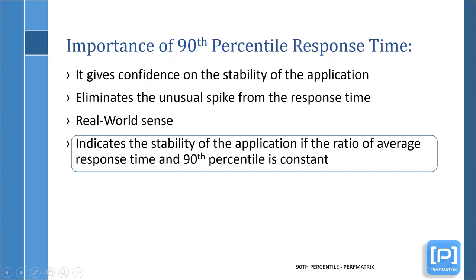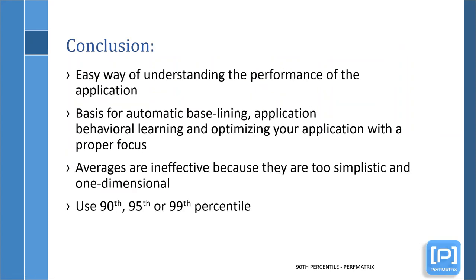This is one method where 90th percentile is useful, although I would recommend drawing your conclusions using standard deviation as well. Percentiles are a really great and easy way of understanding the real performance characteristics of an application. They also provide a great basis for automatic baselining, application behavioral learning, and optimizing the application with proper focus. Averages are ineffective because they are too simplistic and one-dimensional. In short, percentiles — 90th, 95th, and 99th — are great in the performance testing world.